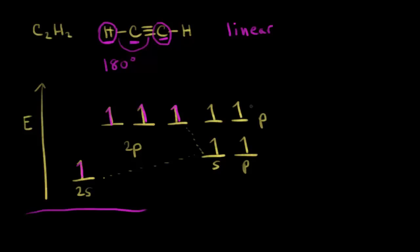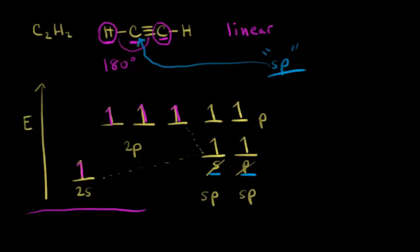That leaves behind two p orbitals, each with one electron in it. So we have carbon's four valence electrons. The s orbital and p orbital are hybridized to form an sp hybrid orbital. This is called sp hybridization because our new hybrid orbitals came from one s orbital and one p orbital. This carbon in acetylene is sp hybridized since it's bonded to two atoms, and so is the other carbon.